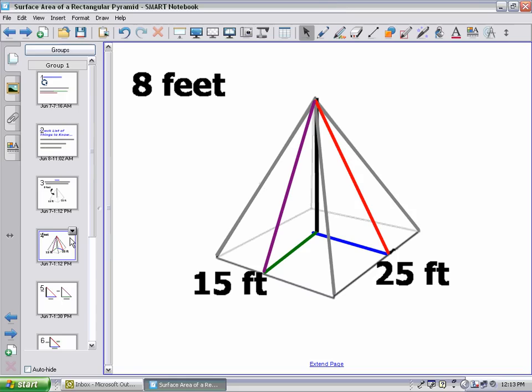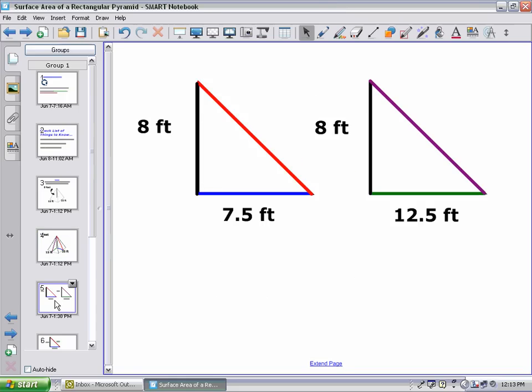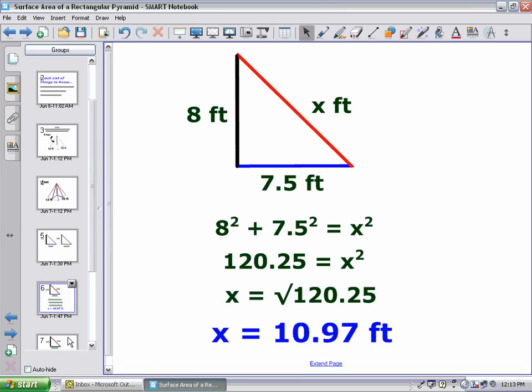So now when I apply my Pythagorean theorem, it's going to look like this. These are going to be my values. Half of 15 is 7.5, and half of 25 is going to be 12.5. So then I go through and I do the Pythagorean theorem for each. 8 times 8 plus 7.5 times 7.5, and then the square root of this value comes out to be 10.97 feet. That's my missing value, my slant height that is labeled in red.